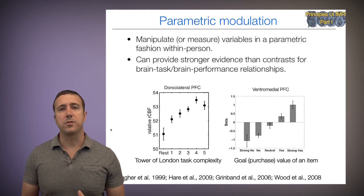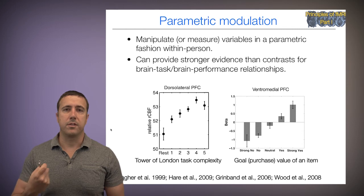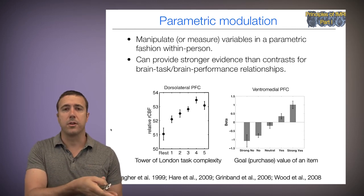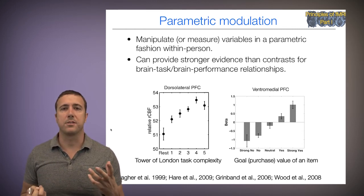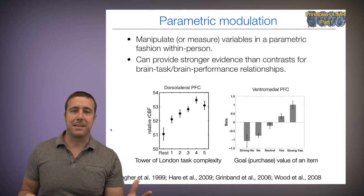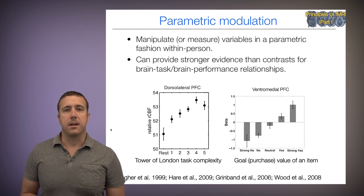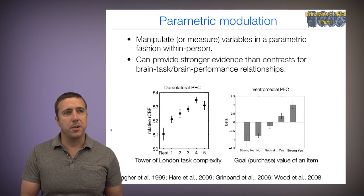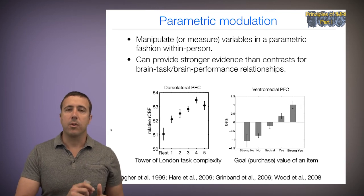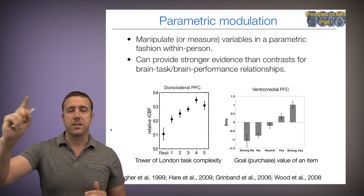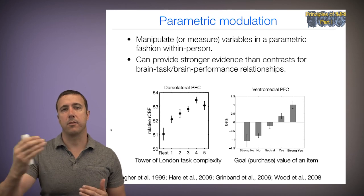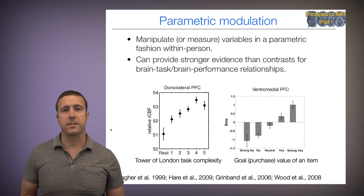On the right, we're looking at the ventromedial prefrontal cortex. There are five levels involving different levels of the goal or purchase value of an item. People were asked how much they want to buy a hat, a pencil, or a mug. When people said they don't value it much, activity is low, and the more they value the item, the more there's a parametric increase in brain activity in the ventromedial prefrontal cortex. These are some of my favorites of parametric modulation designs.